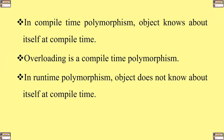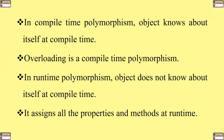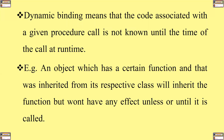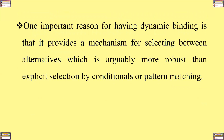In runtime polymorphism, an object does not know about itself at compile time — it assigns all properties and methods at runtime. Dynamic binding means that the code associated with a given procedure call is not known until the time of the call at runtime. One important reason for having dynamic binding is that it provides a mechanism for selecting different alternatives, which is arguably more robust than explicit selection by conditionals or pattern matching.